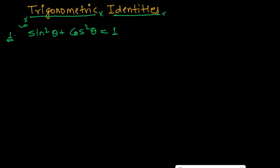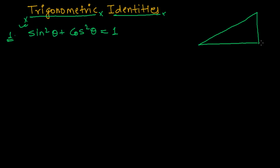Let me first draw a right angle triangle. Suppose this is my right angle triangle — let me name this triangle ABC. Suppose this angle is theta, and this angle here is 90 degrees.